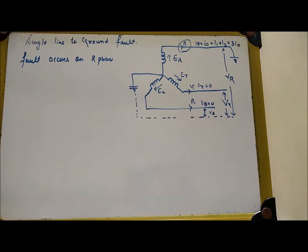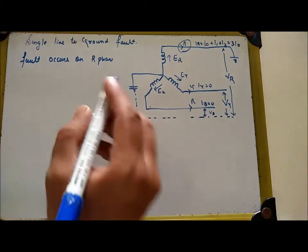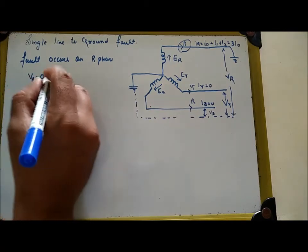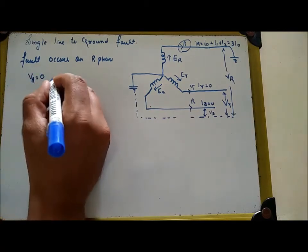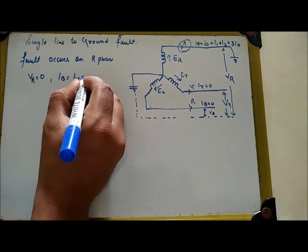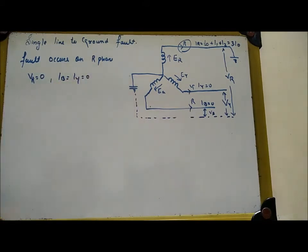From the diagram, we can say that VR is equal to 0 due to the fault, and IB equal to IY which is equal to 0. So the conditions during the fault on R-phase are: VR equal to 0, IB equal to 0, and IY equal to 0.